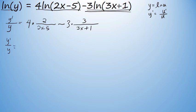Simplifying those two terms, we can see that y prime over y — and note that we have not solved for y prime yet. We haven't found the derivative of y with respect to x, but we're going to clean things up first. On the right side, we have 8 over 2x minus 5 minus 9 over 3x plus 1.